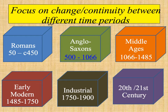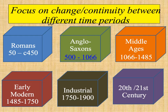Good chronological understanding is really important on the Crime and Punishment exam. You'll need to know examples of crimes, law enforcement and punishments for each of the different time periods. The 6 different time periods are: the Romans, 50 to circa 450; the Anglo-Saxons from around 500 to 1066; the Middle Ages or medieval times; the early modern period, the time of the Tudors and the Stuarts; the era of the Industrial Revolution; and lastly the modern era, the 20th and 21st centuries.